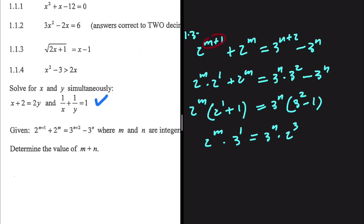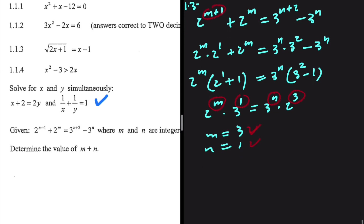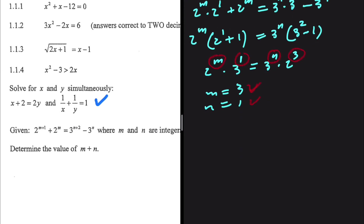Matching the bases on both sides, if m equals 3 and n equals 1, the left and right hand sides are equal. So m equals 3 and n equals 1, and therefore m plus n equals 3 plus 1, which equals 4.